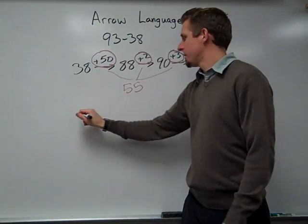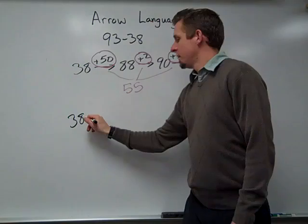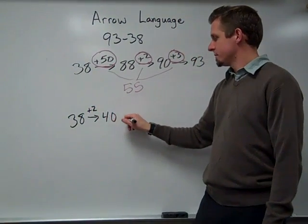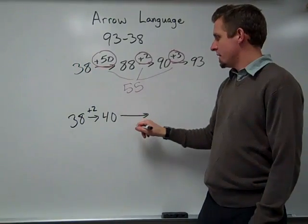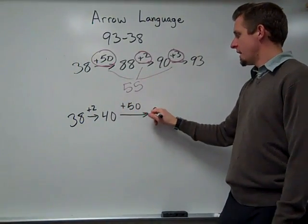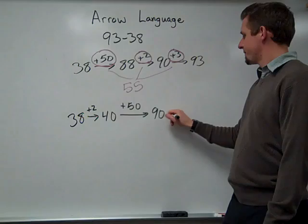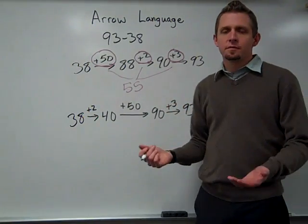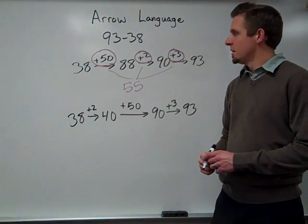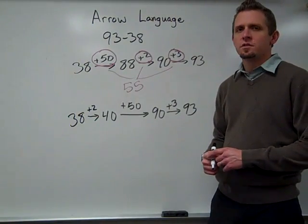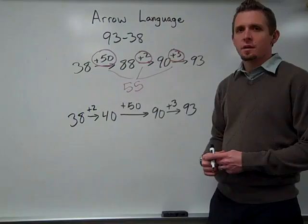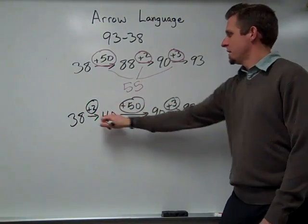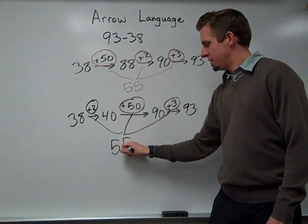Or maybe another way to think about it, 38. First go to my friendly number of 40 by adding 2. Then adding 50 to get to 90. Plus 3 more to get to 93. It's a little bit different order. And as you can see, students can do this lots of different ways, just using numbers that they're comfortable with that are easy for them to use. So again, 2 plus 50 plus 3 gives me my answer of 55.